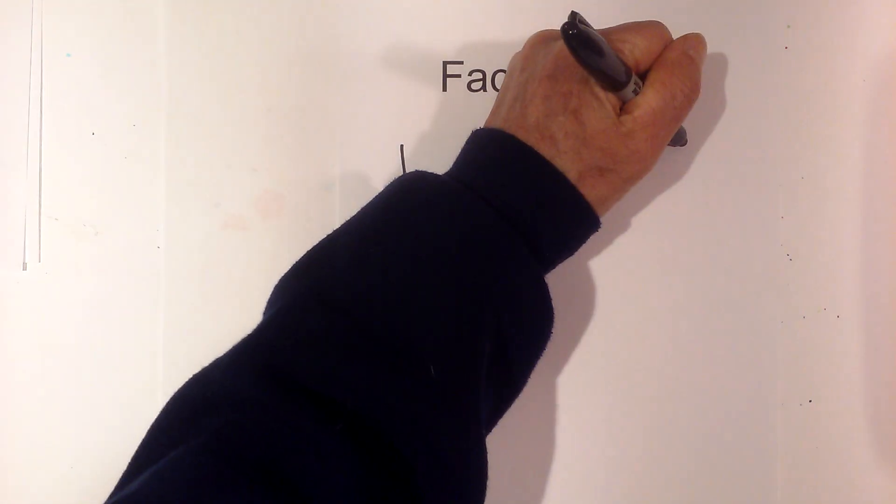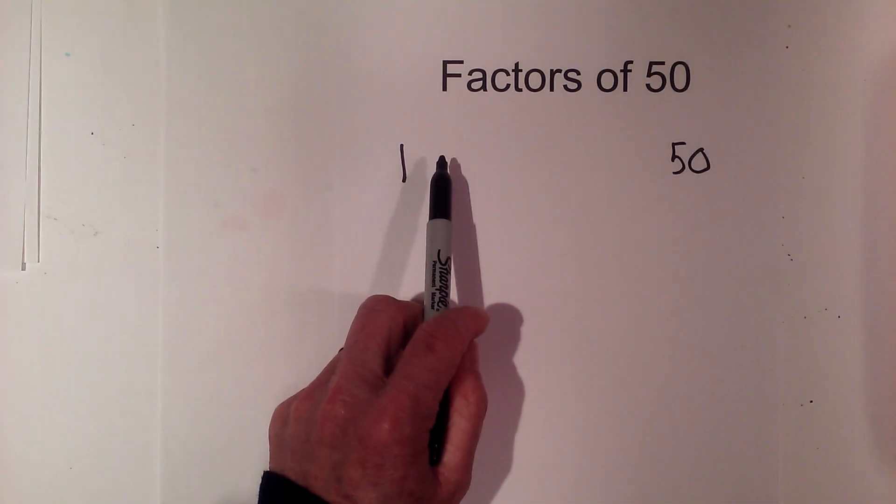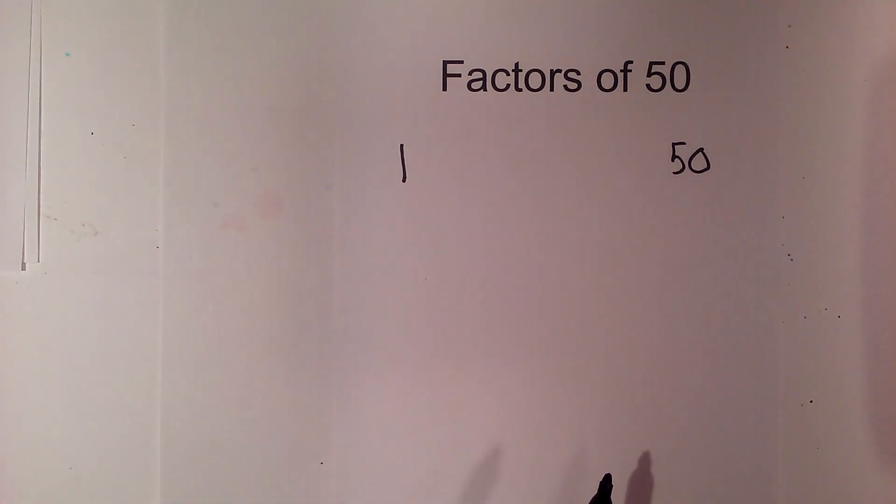I'm going to write 1 and 50 because I know 1 times 50 is 50. Now I find all the numbers in between that multiply together to equal 50.